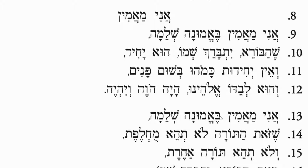Specifically from Perek HaChelek — the chapter of Chelek, which is the 10th chapter of Sanhedrin — where he lists things that are required beliefs for Judaism. They are discussed in long essay form, and then later in the early Renaissance period, an unknown poet distilled that list into what has come to be called the Ani Ma'mins — the 'I believes.'